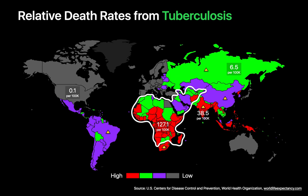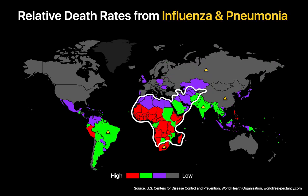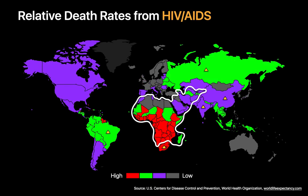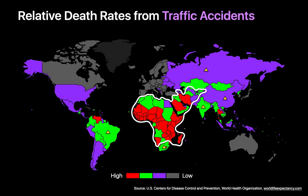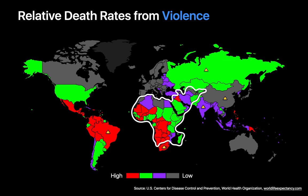Relative death rates from TB in middle-income BRICS countries vary greatly, ranging from high in India to moderately high in Russia to moderately low in China and Brazil. Relative death rates from influenza and pneumonia are also dramatically higher in low-income countries than in high-income countries, China, and Russia. Relative death rates from HIV-AIDS are dramatically higher in Africa than in most high- and middle-income countries. Relative death rates from birth trauma and from traffic accidents in low-income countries are substantially higher than in most high- and middle-income countries.